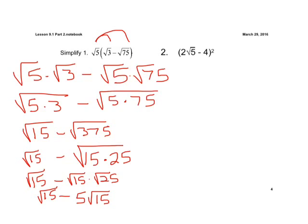Now we have our like terms — our like radicand and our like index. This is the same as 1 times that. So if we have 1 square root of 15 and we take away 5 of them, we're going to end up with negative 4 radical 15. And this is our answer — our simplified form. We had to keep working until we got like radicals.